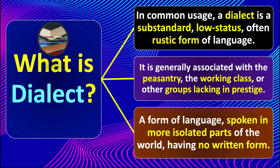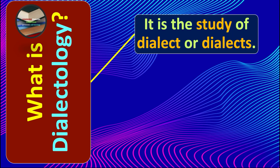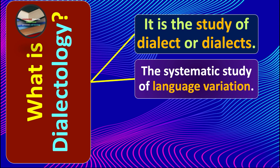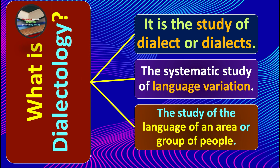Now let's talk about what dialectology is. It is the study of a dialect or dialects — it could be the study of one dialect or many dialects. In other words, the systematic study of language variation is known as dialectology. Further, the study of the language of an area or group of people is also known as dialectology.